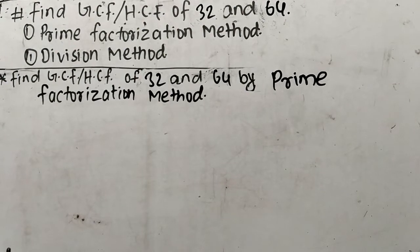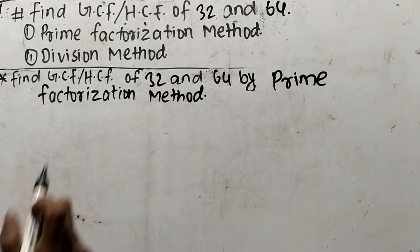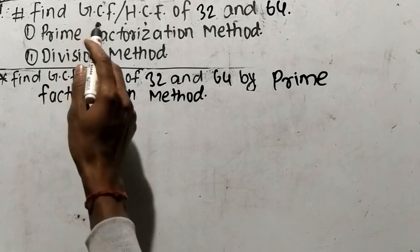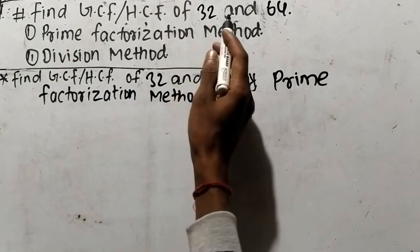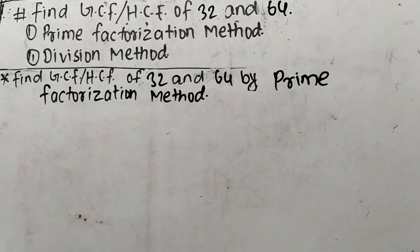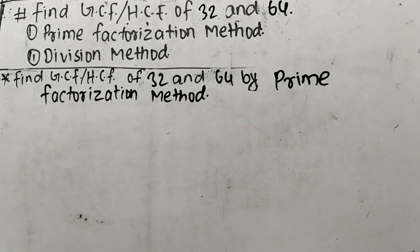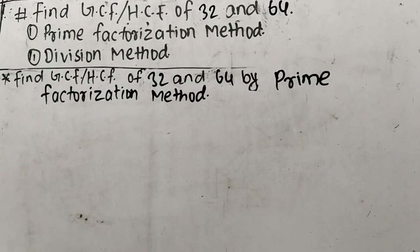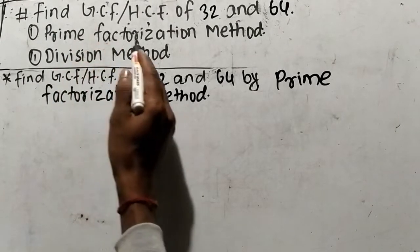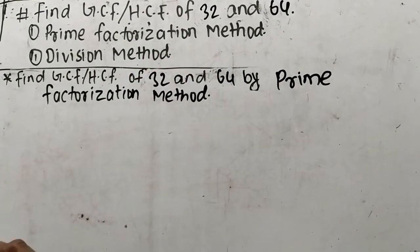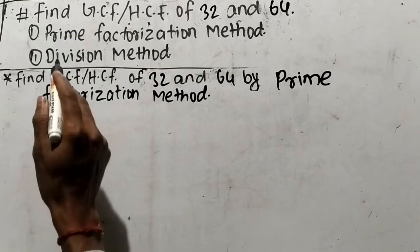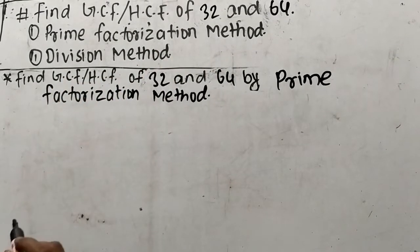Today in this video we shall learn to find GCF or HCF of 32 and 64. Here we shall find out GCF or HCF by two methods: first by prime factorization method and second by division method.